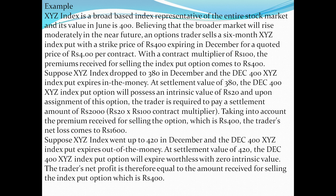Suppose XYZ index went up to 420 in December. The December 400 XYZ index put expires out of the money at the settlement value of 420. The December 400 XYZ index put option will expire worthless with zero intrinsic value. The trader's net profit is therefore equal to the amount received for selling the index put option, which is ₹400.